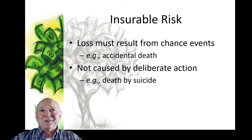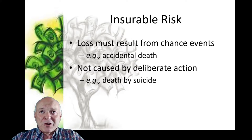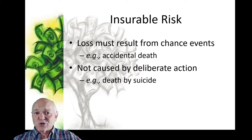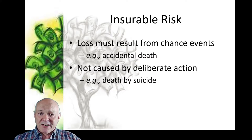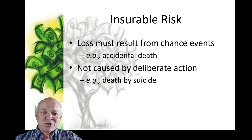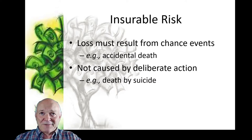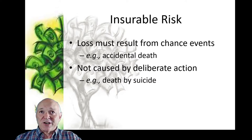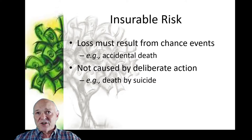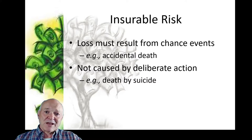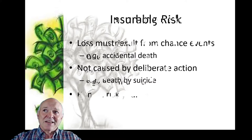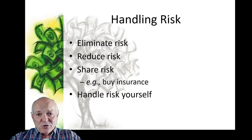The risk must occur from chance events. If we know something is going to happen — if a fire is already coming down the hill toward a house — it's too late to insure. Accidental death is a good example of a chance event. Suicide, on the other hand, is deliberate action, and for that we couldn't get insurance — and if we could, it would be incredibly expensive.